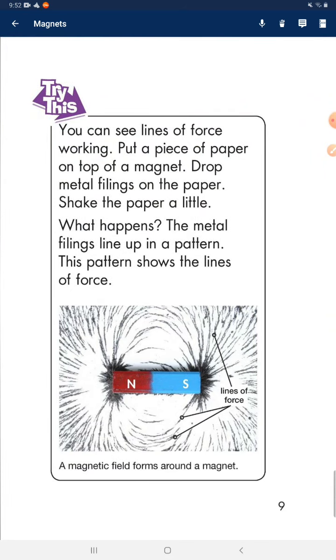Try this. You can see lines of force working. Put a piece of paper on top of a magnet. Drop metal filings on the paper. Shake the paper a little. What happens? The metal filings line up in a pattern. This pattern shows the lines of force.